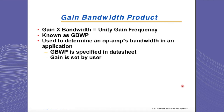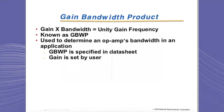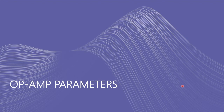The gain bandwidth product is used to determine an op-amp's bandwidth in a certain application. It is specified in the data sheet, where a user sets up the gain and can then find the bandwidth of the circuit. In the next part of this presentation, we will be talking about some of the basic operational amplifier parameters, including some of the interface factors.